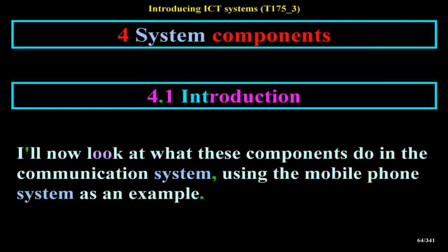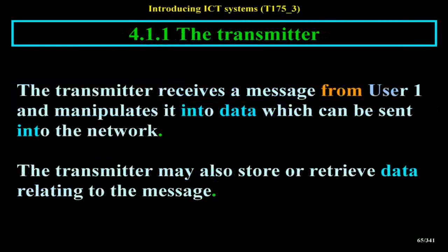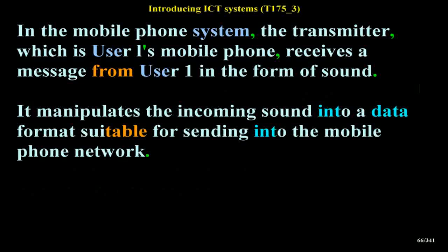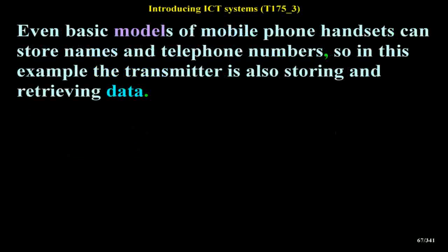I'll now look at what these components do in a communication system, using the mobile phone system as an example. The transmitter receives a message from user 1 and manipulates it into data which can be sent into the network. The transmitter may also store or retrieve data relating to the message. In the mobile phone system, the transmitter — user 1's mobile phone — receives a message from the user in the form of sound, and manipulates the incoming sound into a data format suitable for sending into the mobile phone network. Even basic models of mobile phone handsets can store names and telephone numbers, so the transmitter is also storing and retrieving data.